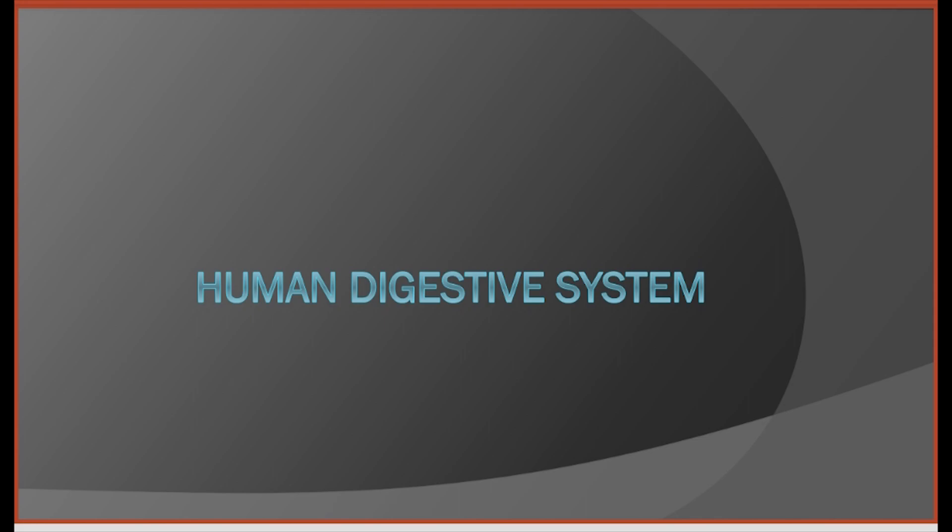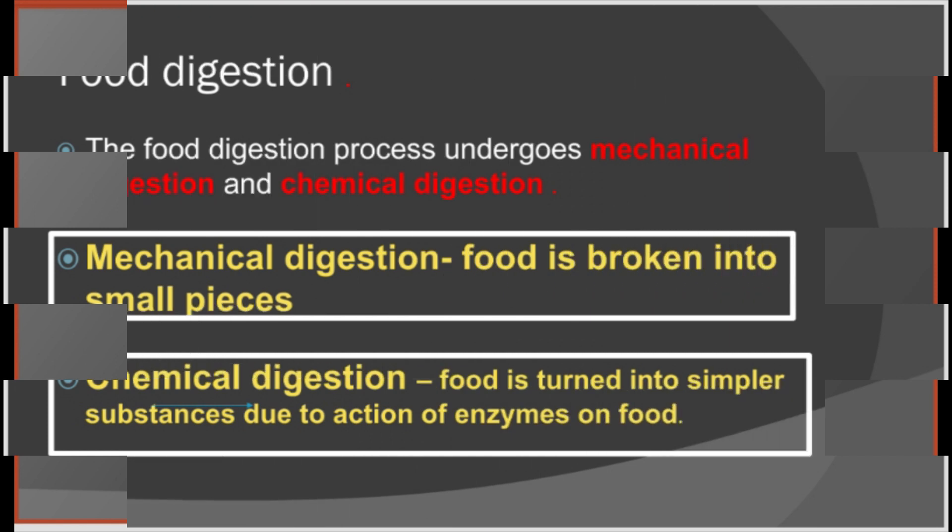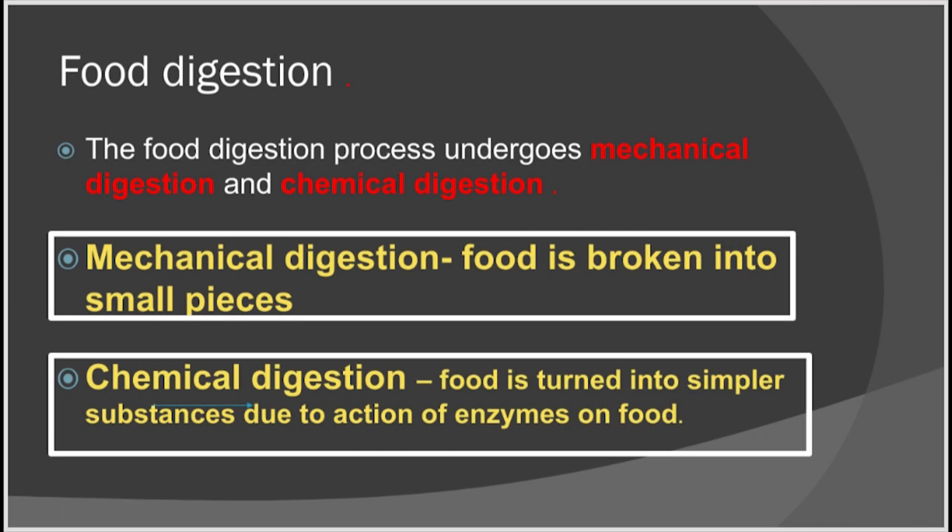Food digestion is the process by which complex organic substances are turned into simpler products to be absorbed into the human body. The entire digestion process is supported by mechanical digestion as well as chemical digestion. During mechanical digestion, the food is broken into small pieces, and during chemical digestion, the food is turned into simpler substances due to the action of enzymes on food.